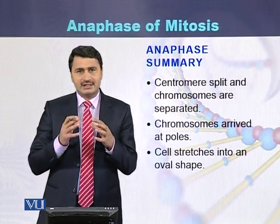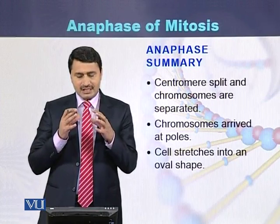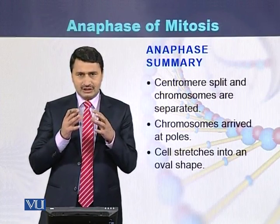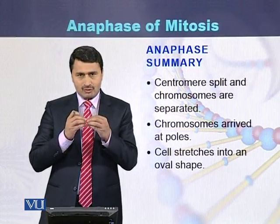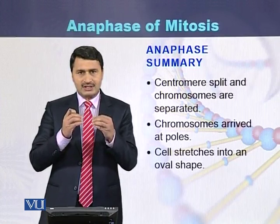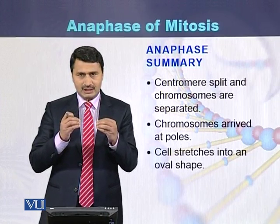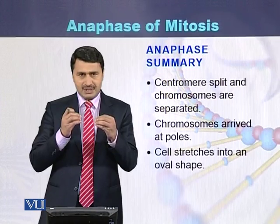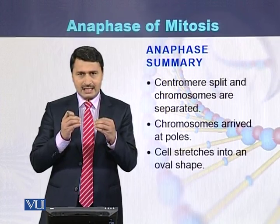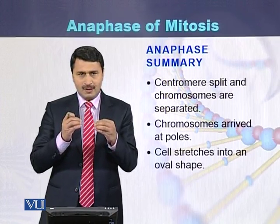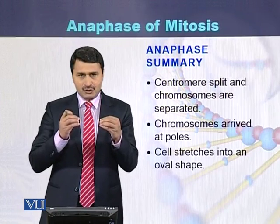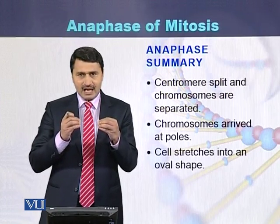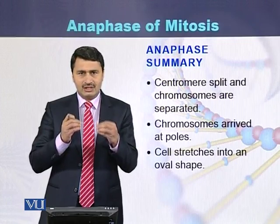To summarize anaphase, there are three main events: the centromere of the chromosome splits and the sister chromatids separate from each other. These sister chromatids then behave like individual chromosomes and start to move towards the opposite poles, arriving at the poles of the cell.